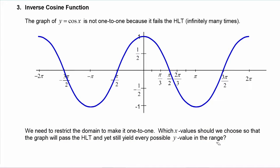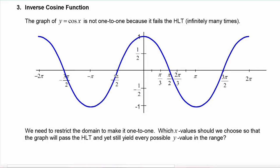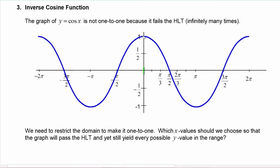We know that the range of this cosine graph is from negative one to positive one. So we cannot pick the same x values that we picked for sine. Remember that for the sine graph we went from negative pi over two to positive pi over two. If we made that same choice here for the cosine graph, we would only get y values from zero to one, so we would be missing half of the y values. So the choice here is we can start at x equals zero and go to x equals pi.